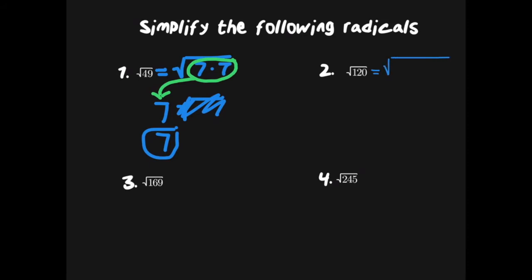For 120, we write our square root and note that the prime factorization is 2 to the third power times 3 times 5, meaning we have three 2s, a 3, and a 5. Remember the rule: every pair means one comes out. I have a pair of twos, so one 2 comes out. Still inside the square root I have one 2, a 3, and a 5.